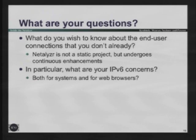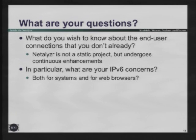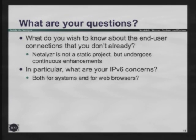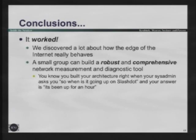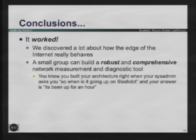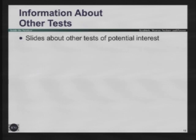The big reason why I'm here is I want to know what your questions are. Netalyzer is an ongoing project - we are continually doing enhancements and want to know what other people want to know about how the network is broken. I've been talking with some of you offline about IPv6 issues - if you have concerns about what you think is going to break, please tell me. It actually works: we are able to pull off a large, wide-scale measurement. You know you built it right when your measurement applet hits Slashdot and the sysadmin asks about it. There is also a tech report available I can email to people.